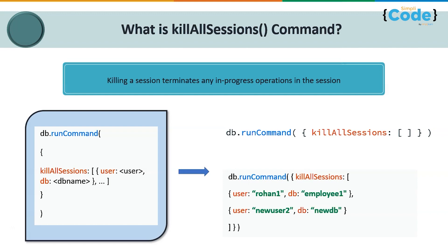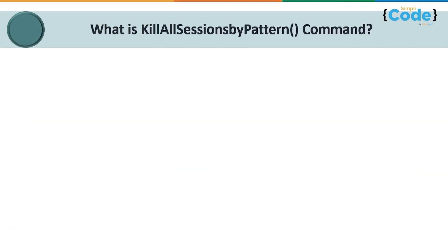If you want to terminate only a specific session, you must mention the user and the associated database. For example, with db.runCommand({ killAllSessions: [{ user: 'rohan1', db: 'employee1' }] }), it will terminate all sessions or transactions ongoing for that user — any read or write operations on that database will be terminated in one go.